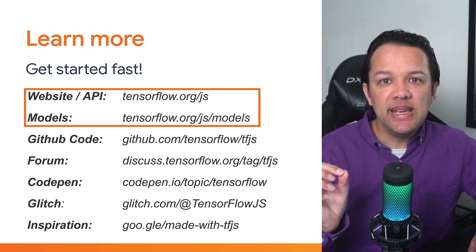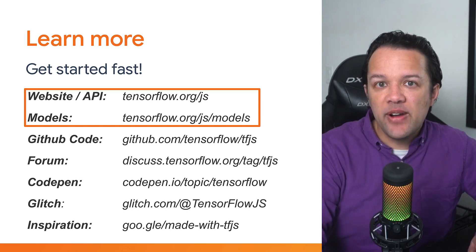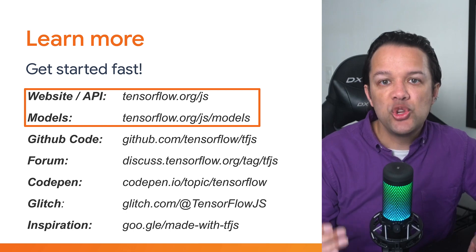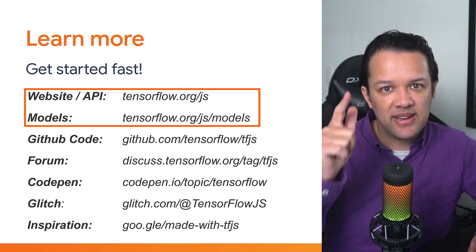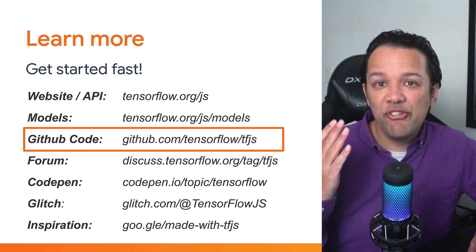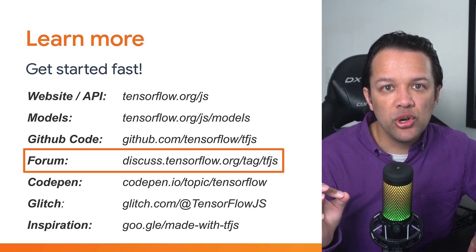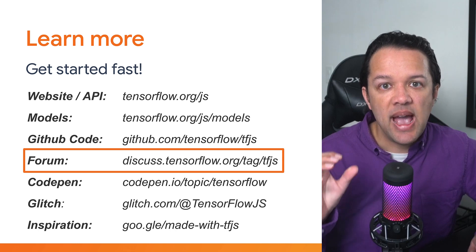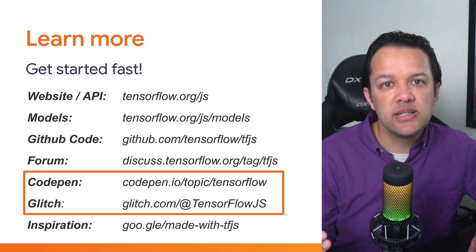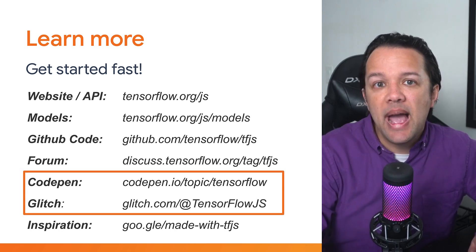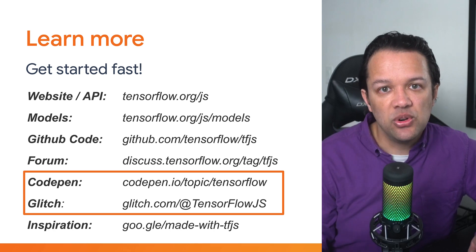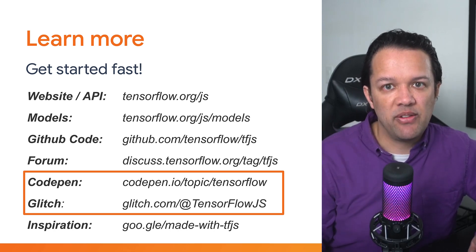Here are some key links you might want to bookmark. You can find our official website for more details on the library itself and the full API, or check out even more of our pre-made models using the second link. You can view our open source code on GitHub and even make a contribution — we are fully open source after all. Check the official TensorFlow forum to ask more technical questions; it's monitored by the TensorFlow.js team, so just remember to tag your post with TFJS. We've also got code examples you can fork in minutes over on glitch.com and codepen.io that provide working boilerplate code to get started really fast.